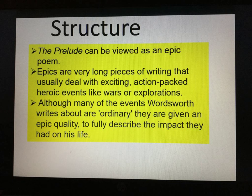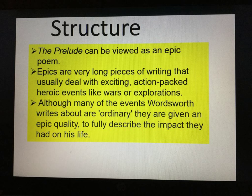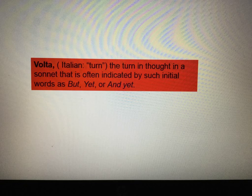The Prelude is viewed as an epic poem. Epic poems are very long pieces of writing that usually deal with exciting, action-packed, heroic events. Although many of the events Wordsworth writes about are ordinary, they are given an epic quality to fully describe the impact they have on his life — for instance, the viewing of the mountain and how it changes Wordsworth's views. The Prelude also uses the volta, meaning a turn in thought, usually indicated by words such as 'but,' 'yet,' or 'and yet.'